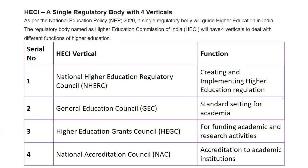The four verticals of HECI are: the National Higher Education Regulatory Council, which creates and implements higher education regulation; the General Education Council, which sets academic standards; the Higher Education Grants Council, which handles funding for academics and research; and the National Accreditation Council, which accredits academic institutions. You should know all four verticals and their functions well.